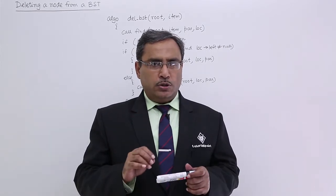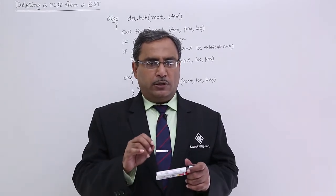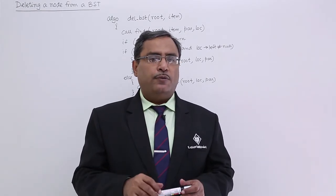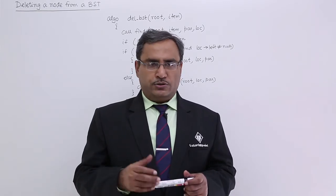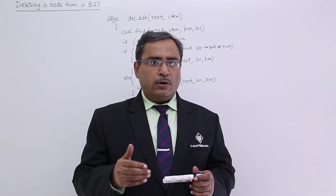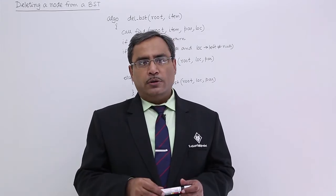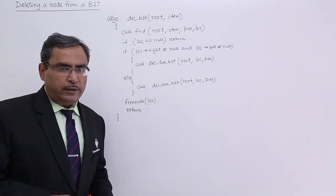And the node where we are going to get this particular item as its info may have 0 child, 1 child or 2 children. Accordingly either del 1 or del 2 algorithm will be called. Please let us have a look to this particular algorithm.